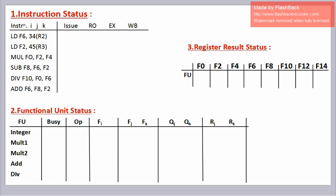First we construct the instruction status, functional unit status, and register result status. In the instruction status we have the instruction set and 4 stages: issue, read operand, execute, and write back, in which our instruction can be.